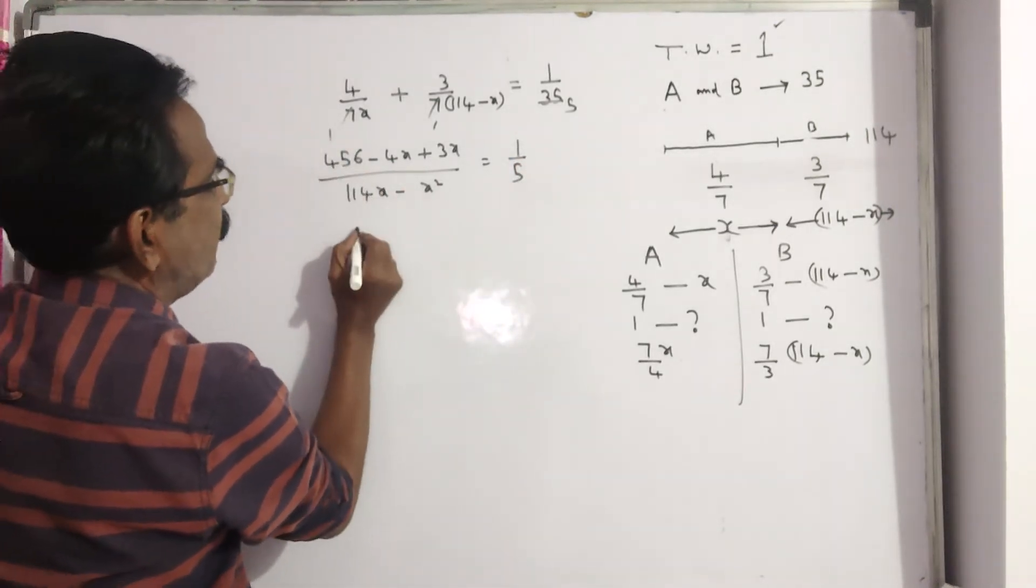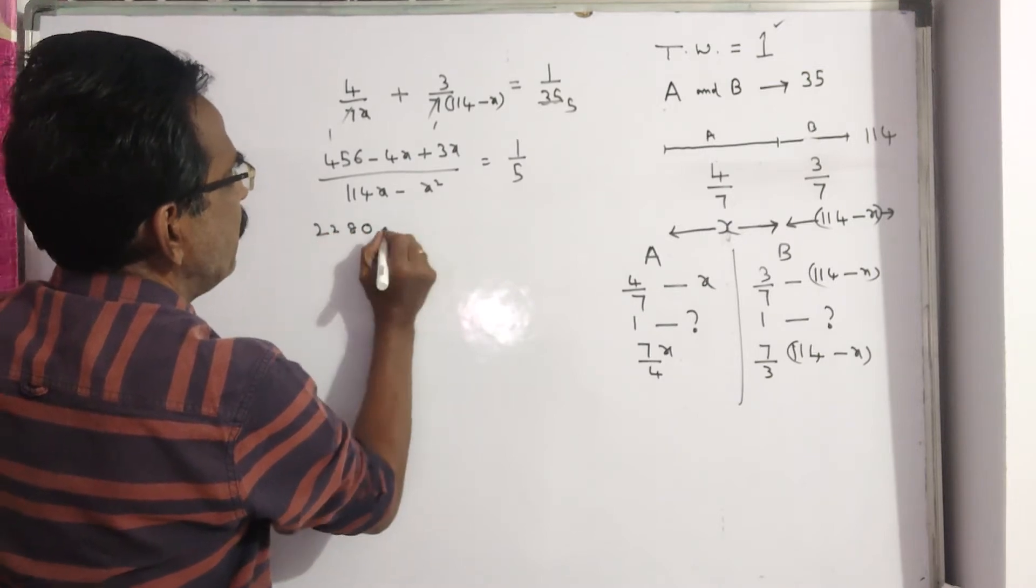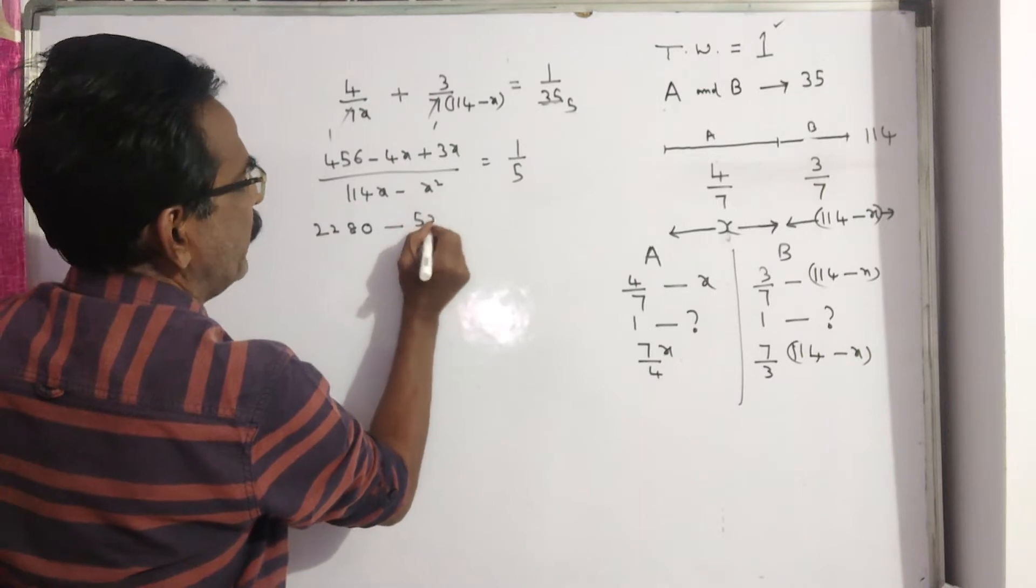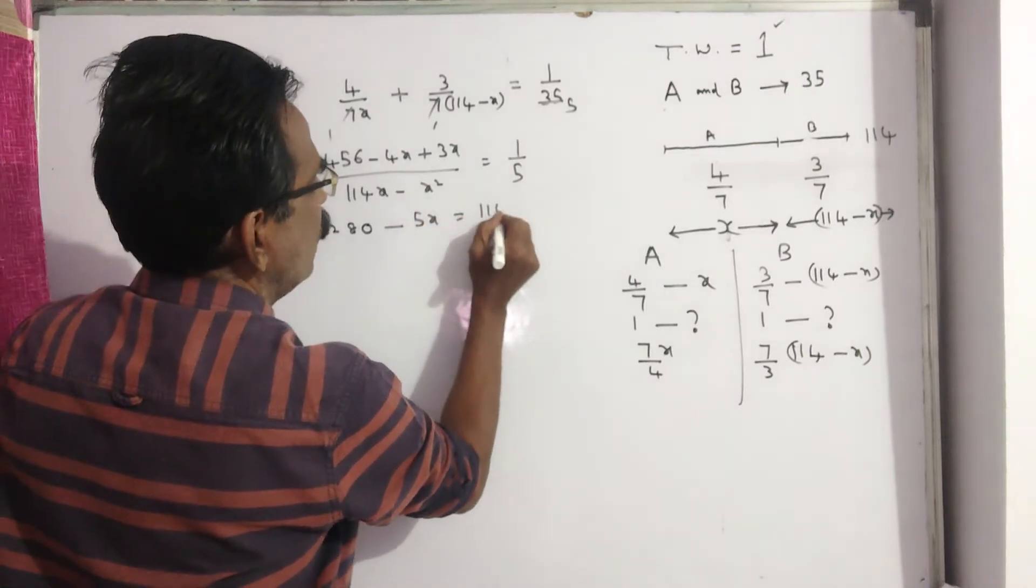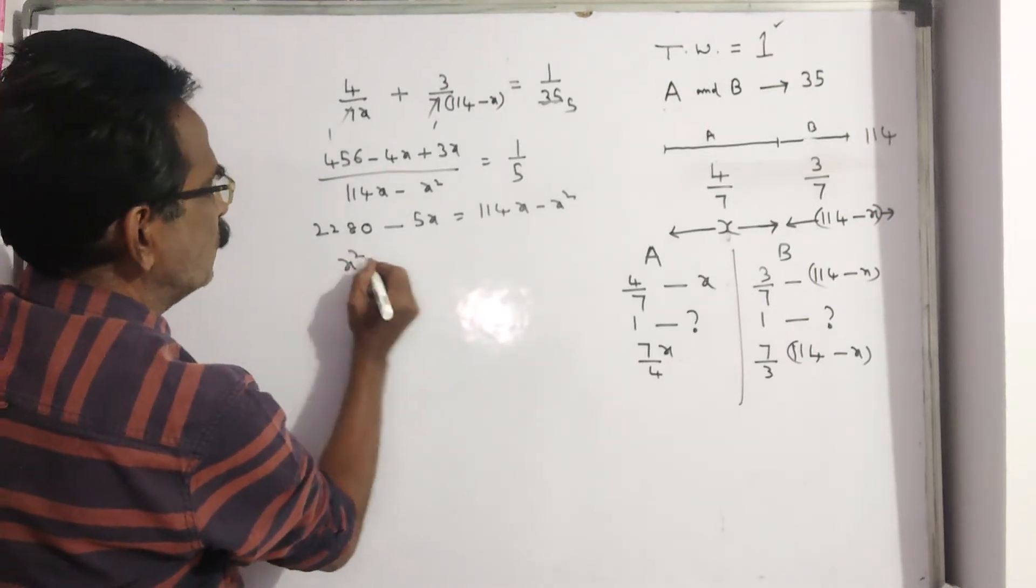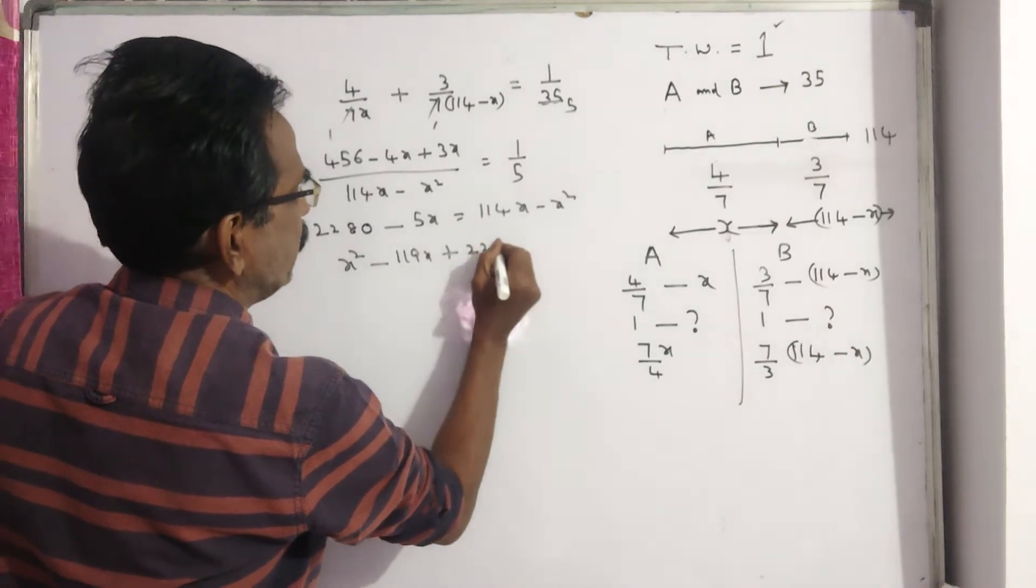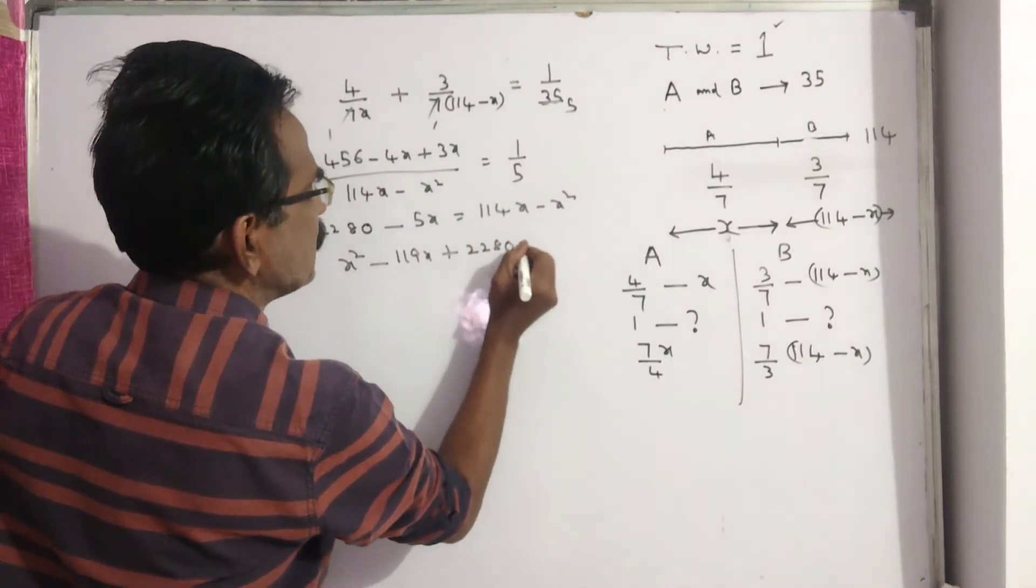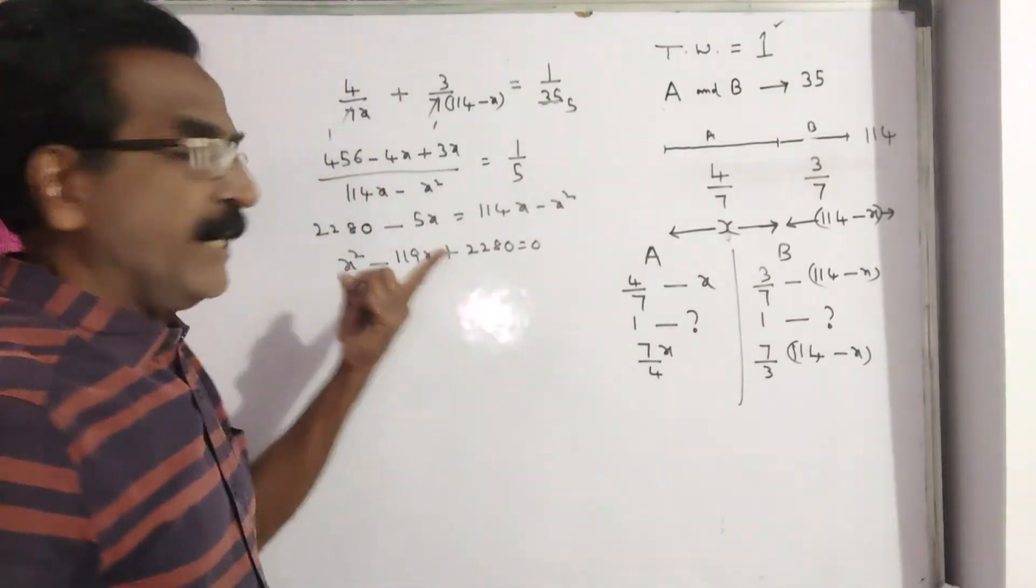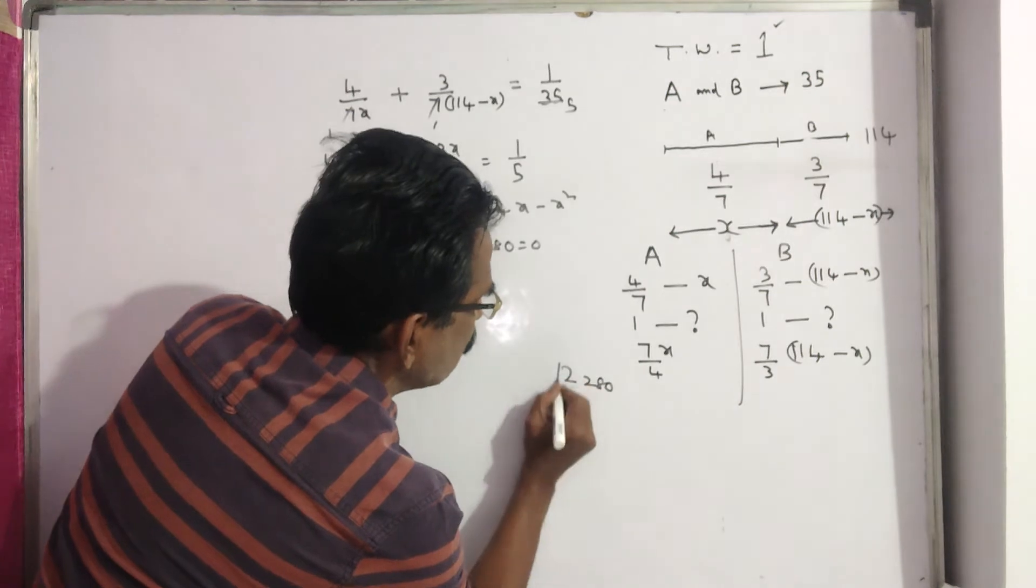5 into 456, 5, 6 is 30, 2280 minus 4x plus 3x minus x into 5 minus 5x is equal to 114x minus x square. It implies x square minus 119x plus 2280 is equal to 0. Now, the factors of 2280 to find the roots.